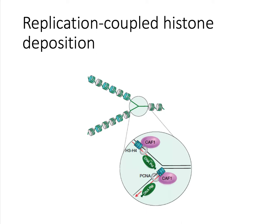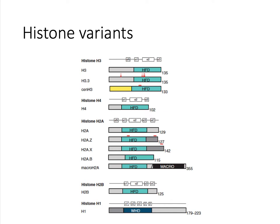But what happens if the cell needs histones in other parts of the cell cycle? For example, if some histones get dislodged during transcription or DNA repair. This is one of the roles of histone variants — proteins closely related to the core histones that carry out specialized functions.